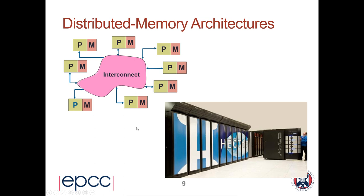This maps very nicely onto the message passing model. In the message passing model we think of processes, but they'll be running on a particular computer. To send data between processes you send messages, which is exactly what happens physically — the data goes down the interconnect and appears on the other side. Although this course is about the message passing model and MPI in particular, it's useful to recognize that message passing maps very nicely onto the distributed memory architecture that large parallel computers have.